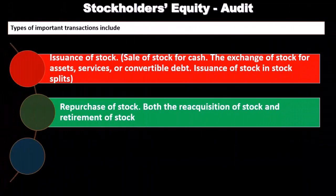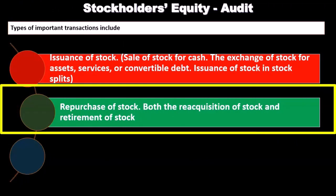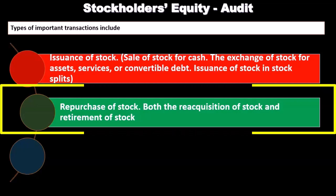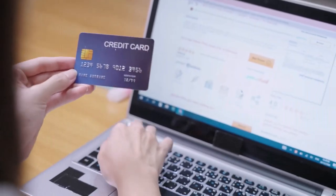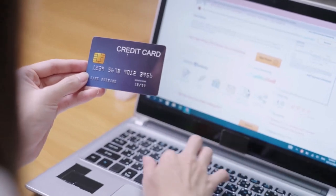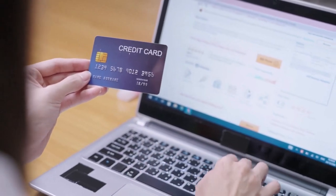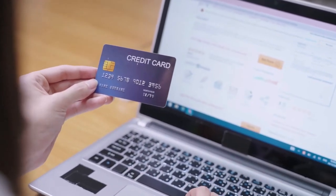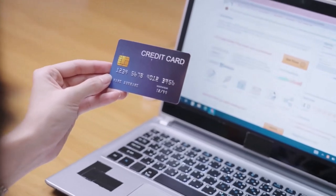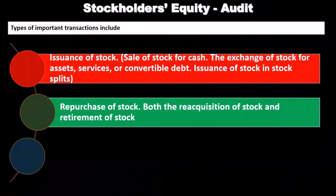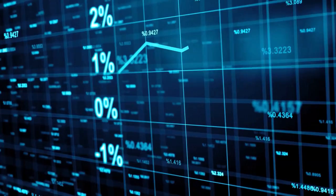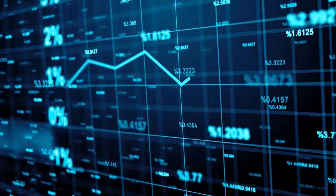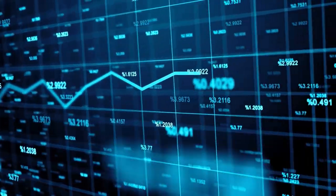The repurchase of stocks — both the reacquisition of stock and retirement of stock — is another type of transaction we want to look into. If the stock is going to be repurchased off the market for a publicly traded company, and they repurchase their own stock either to hold as treasury stock or to retire it, those are transactions we want to be aware of within the audit process.